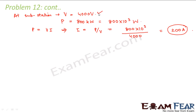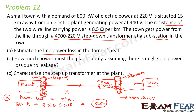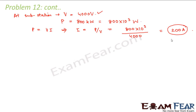Why did we take the voltage as 4000 volts? Because the plant generated at 440 volts, but 440 volts never passed through the transmission line — it was increased to 4000 volts. That is why there is a step-down transformer which changes 4000 volts down to 220 volts, because the town's demand was 220 volts. So 4000 volts traveled through the entire transmission line, and the power is 800 kilowatts — that is how we calculated the current.